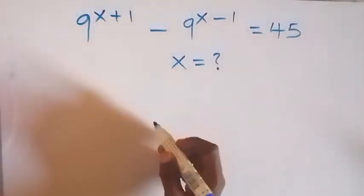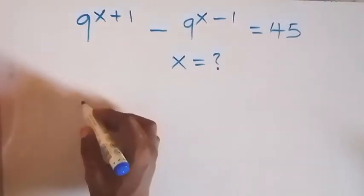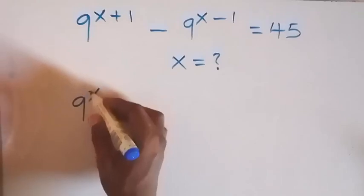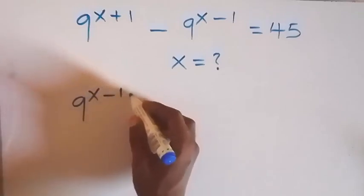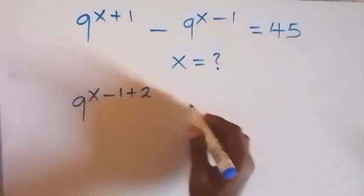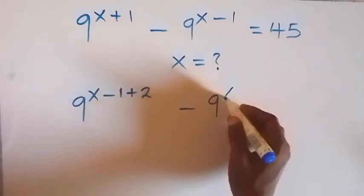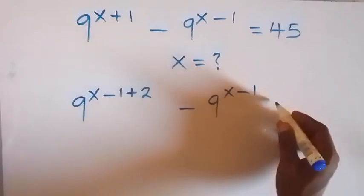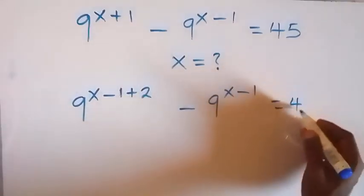Plus 1, we can write it as minus 1 plus 2. And this will be 9 raised to power x minus 1, then plus 2. Then minus 9 raised to power x minus 1. Then equals to 45.